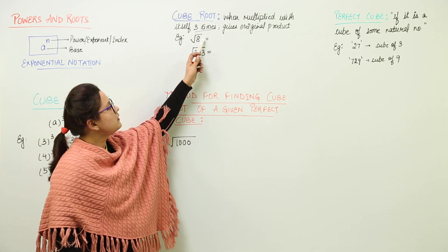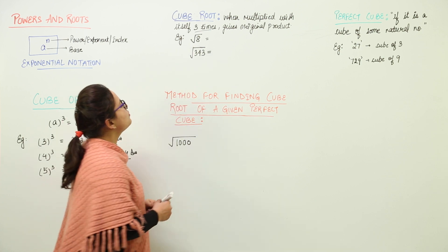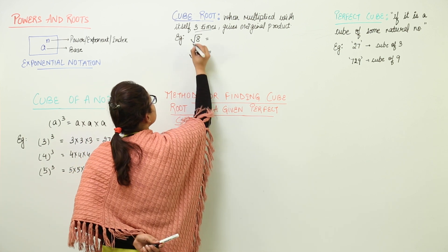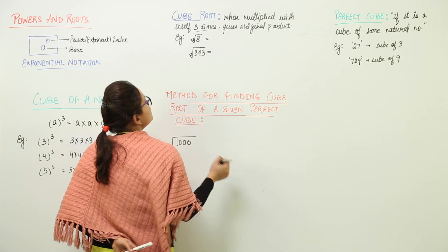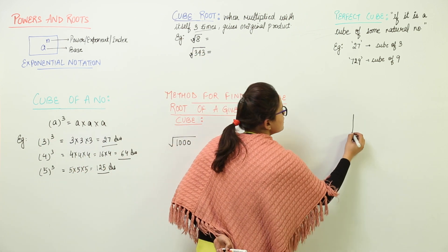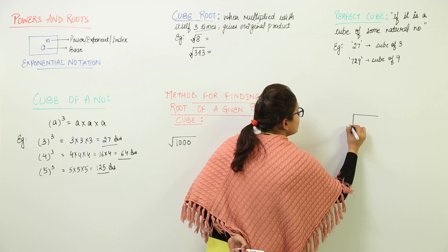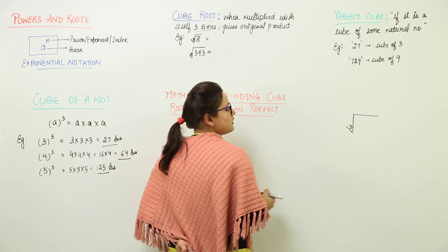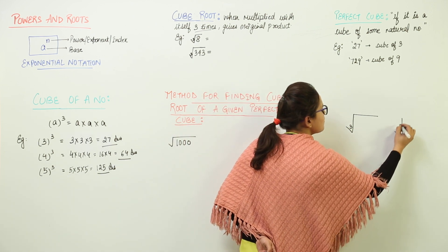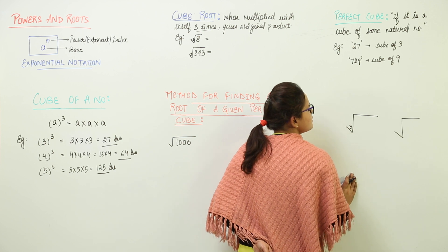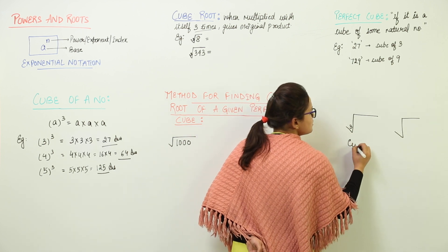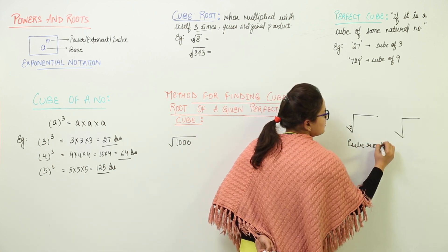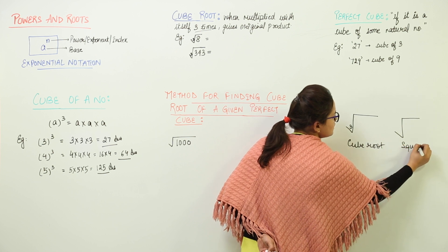For example, here you have to find out the cube root. Now there is very little difference between the representation of cube root and square root. Cube roots are represented with this sign but they have a small 3 written, whereas the square roots have only this sign. Right? So this is the cube root representation and the other one is the square root representation.